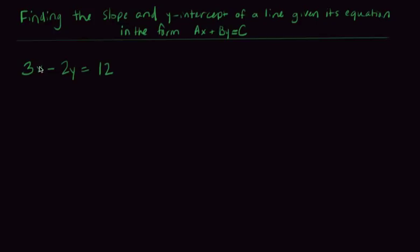So if you have a line but it's given to you in the form ax plus by equals c, a lot of times you'll want to figure out what are the slope and the y-intercept. So we're going to talk about how to do that today.